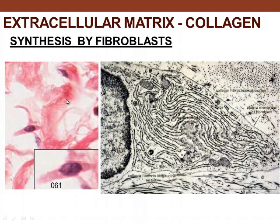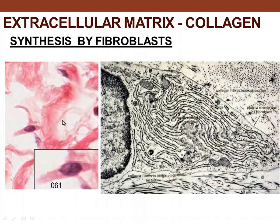Here we see a cluster of collagen bundles and the fibroblasts that create them. Looking at the spleen, we have a capsule of dense irregular connective tissue surrounding it, with lymphoid nodules inside.